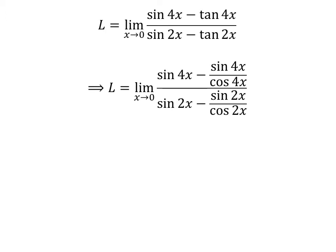We know tangent of theta is equal to sine of theta upon cosine of theta. So L is equal to limit of sine of 4 times x minus sine of 4 times x upon cosine of 4 times x, upon sine of 2 times x minus sine of 2 times x upon cosine of 2 times x, as x approaches 0.